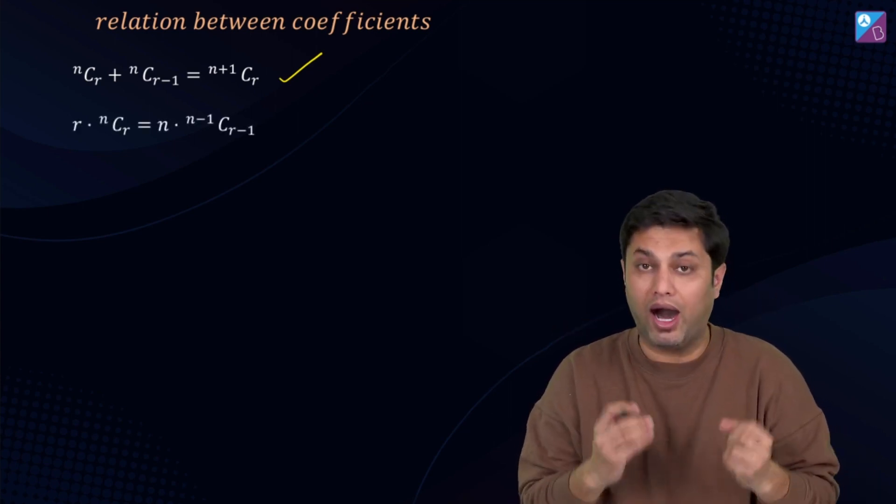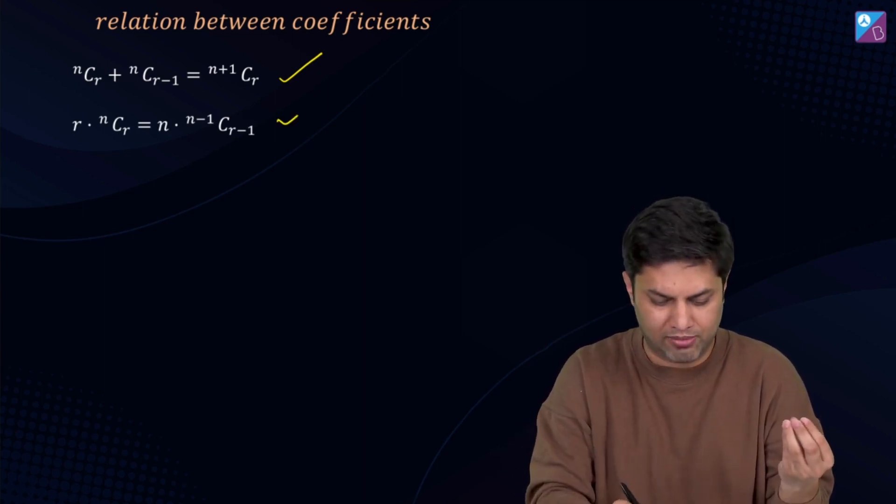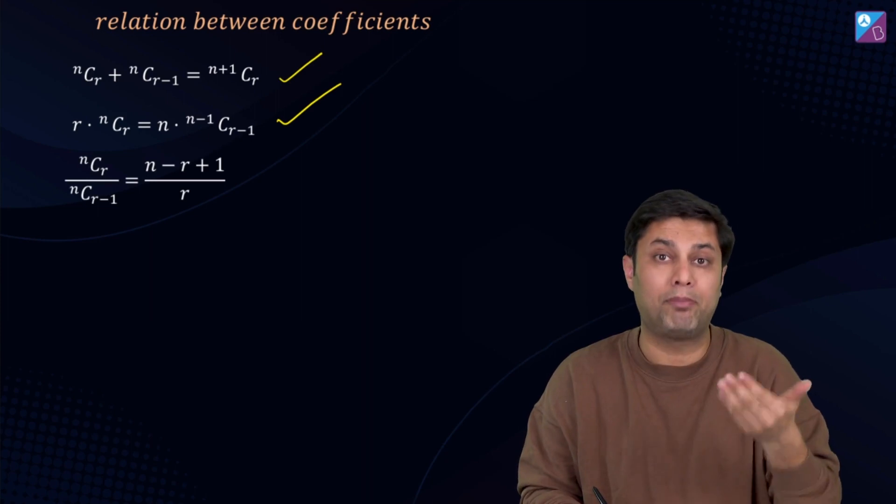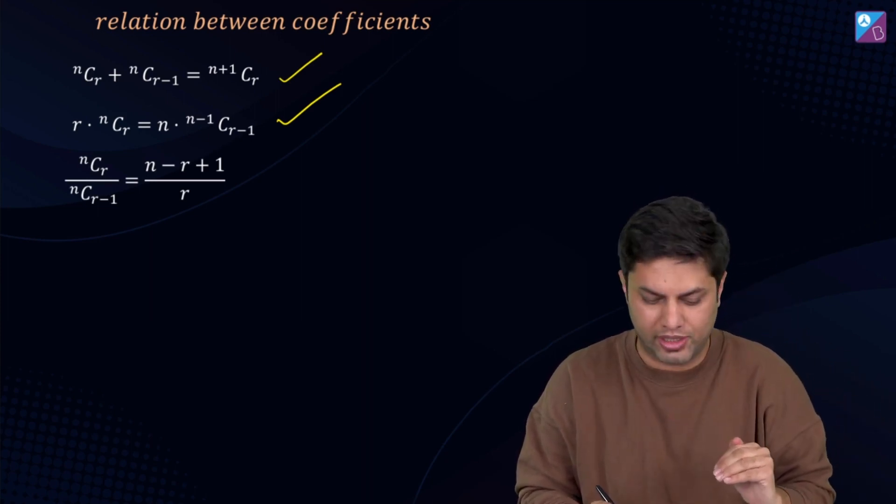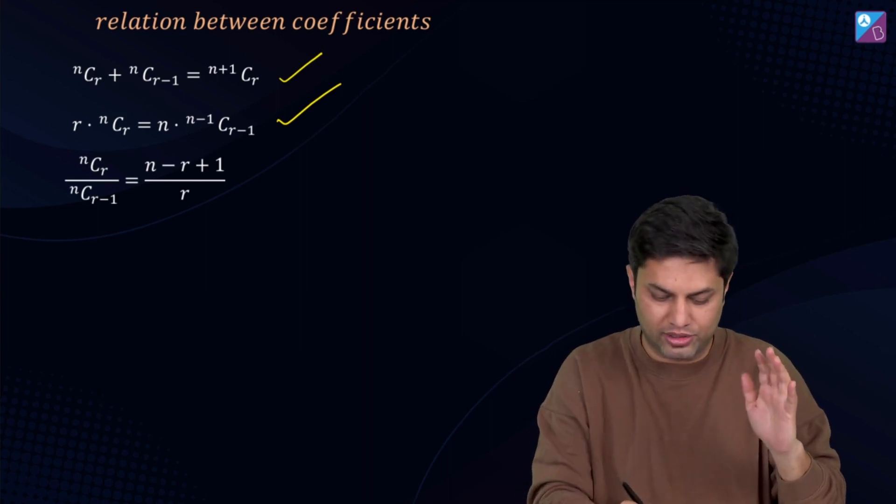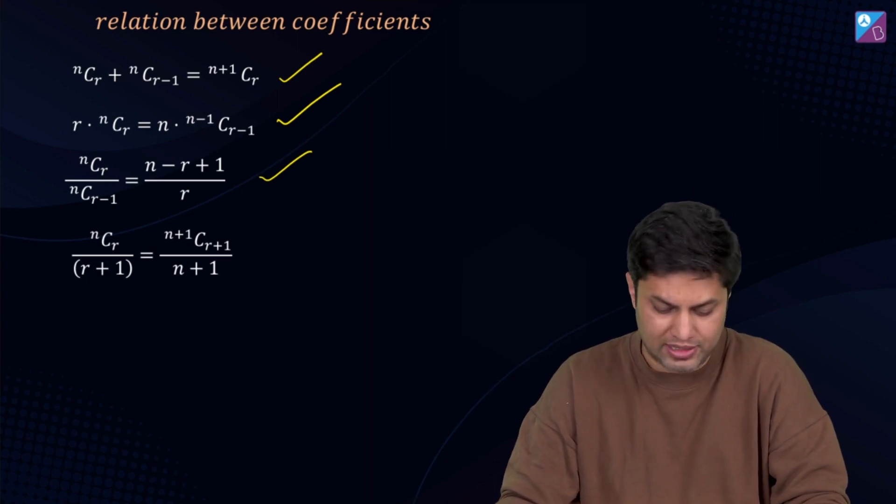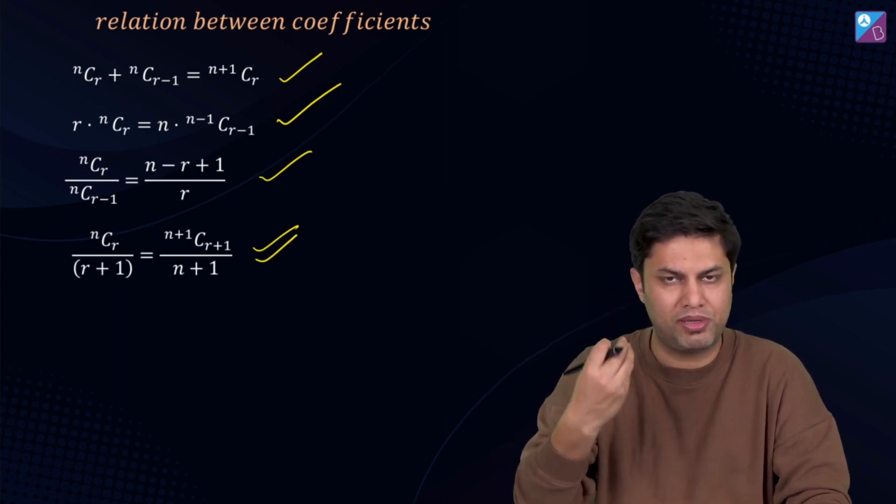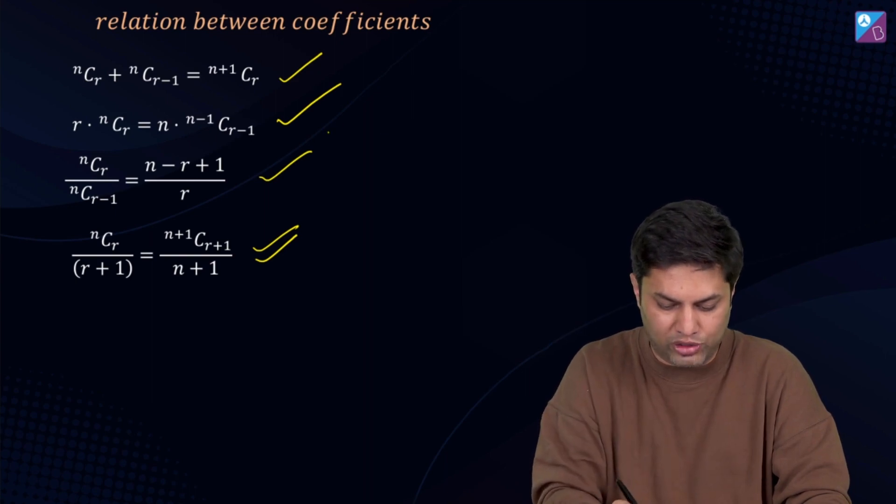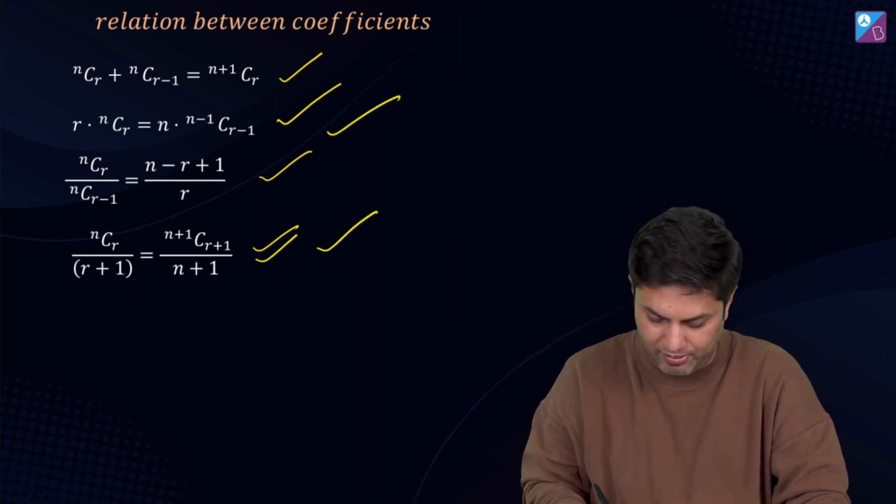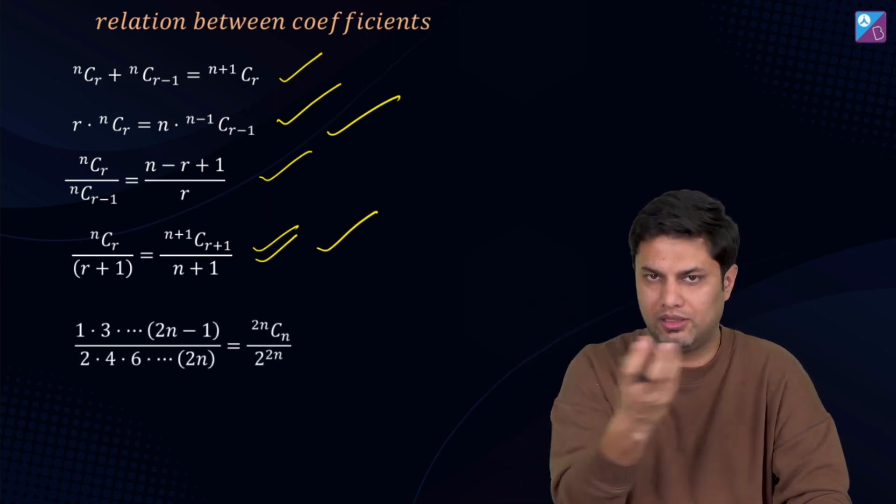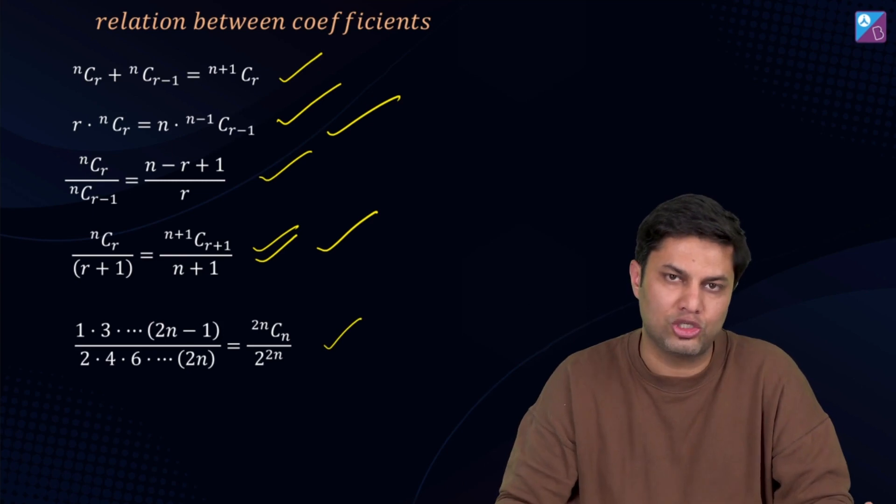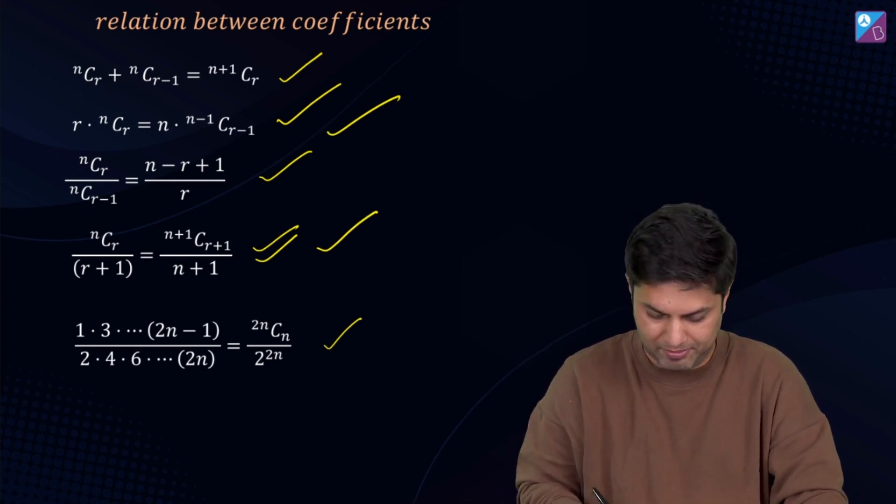This is also a series. These are very important formulas. Coefficient's ratio can do a lot of work. Coefficient's sum can do a lot of work. Second and fourth formulas are also very important. Series will do a lot of work. Besides, the odd numbers product and the even numbers product formula, the ratio is 2nCn / 2^(2n). This is also a very important formula which will do a lot of work in JEE questions.